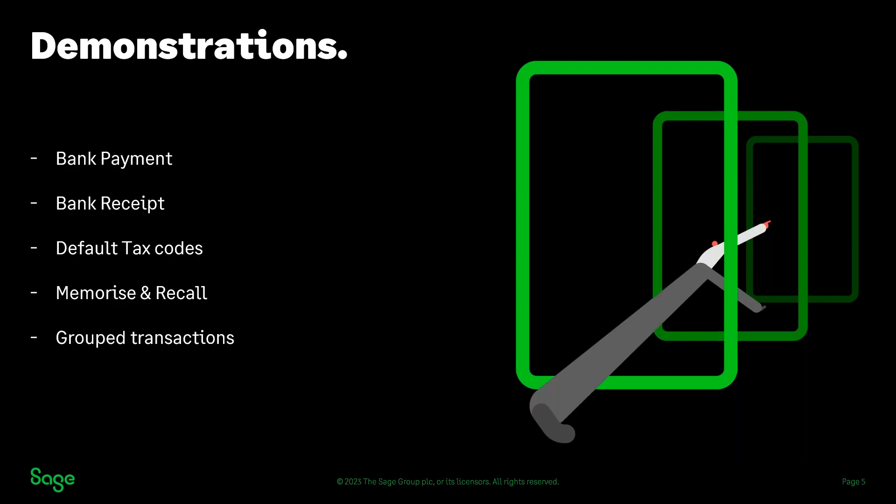In today's demonstration, we're going to look within the bank payment and receipt window, talk about where the default tax code pulls from, how to memorize transactions and recall them, and also briefly cover grouped bank transactions.